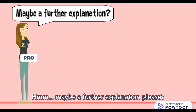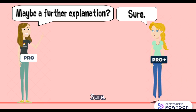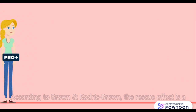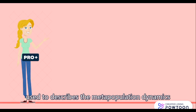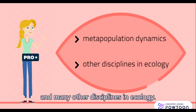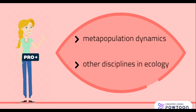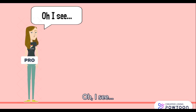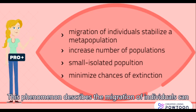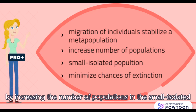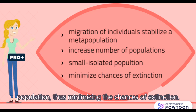Maybe a further explanation please? Sure! According to Brown and Quadrid Brown, the rescue effect is a phenomenon used to describe the metapopulation dynamics and many other disciplines in ecology. This phenomenon describes how the migration of individuals can stabilize the metapopulation by increasing the number of individuals in a small isolated population, thus minimizing the chances of extinction.